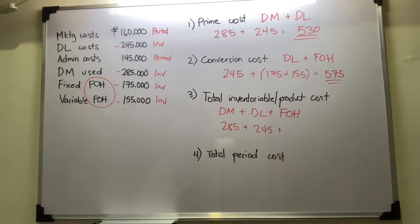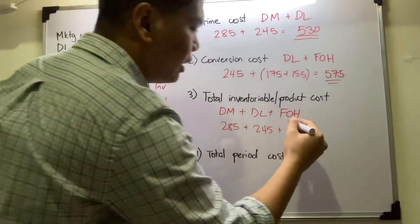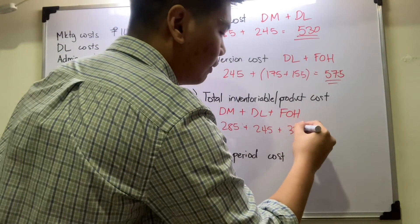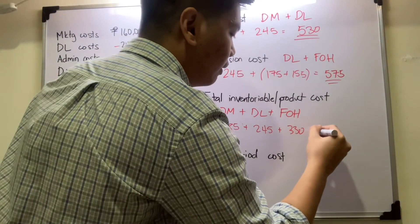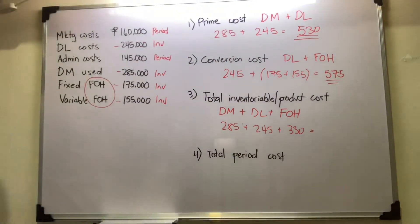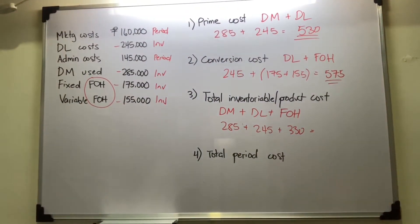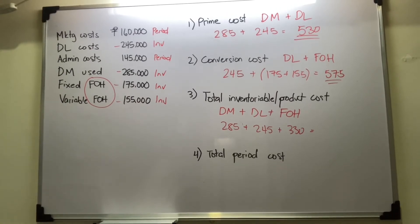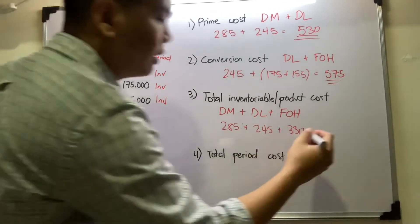So your total inventoriable cost — adding direct materials of 285,000, direct labor of 245,000, fixed factory overhead of 175,000, and variable factory overhead of 155,000 — gives you a total of 860,000 pesos.